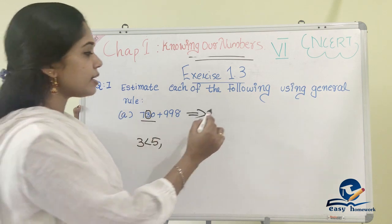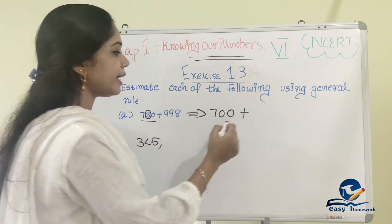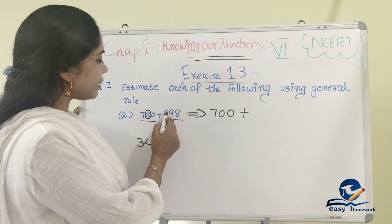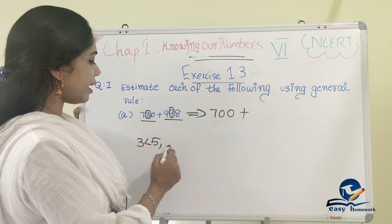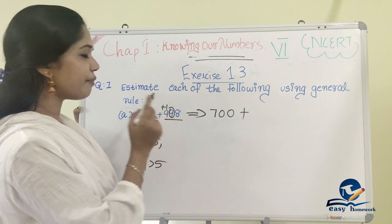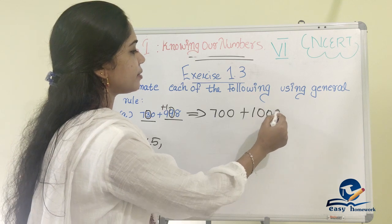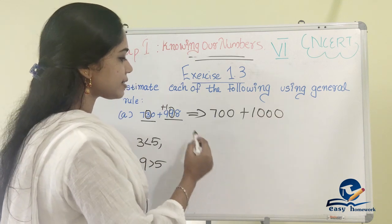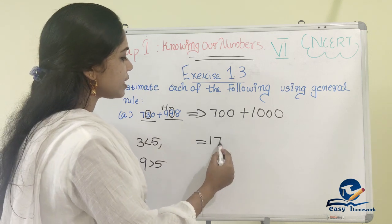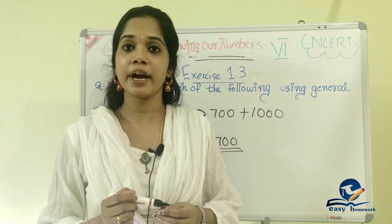So 730 rounds to 700. For 998, in the 100 position we have 9, and rounding to nearest 100 gives us 1000. So the estimated answer is 700 plus 1000, which equals 1,700.